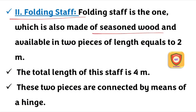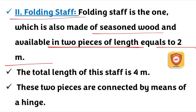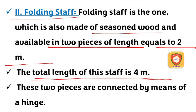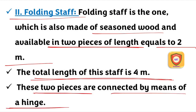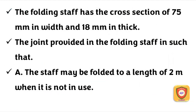The folding staff is made of seasoned wood and consists of 2 pieces. Each piece is 2 meters long, making the whole staff 4 meters total.